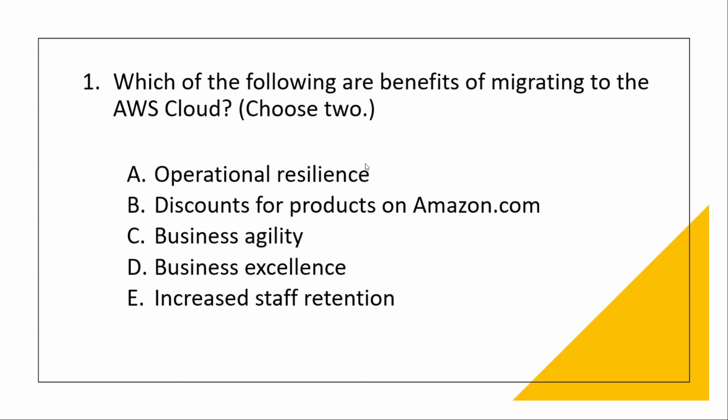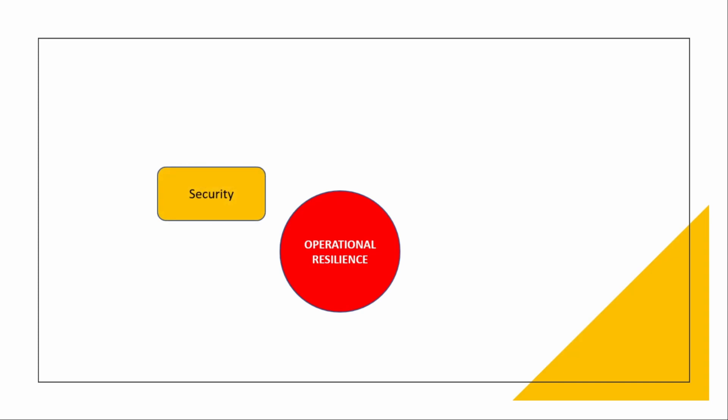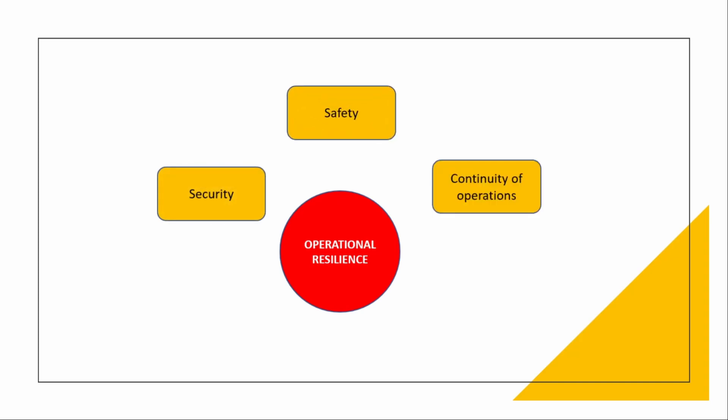Now coming to operational resilience — what does this term mean? Operational resilience means giving you security, safety, and continuity of operations. Due to some disaster or whatever, AWS has mechanisms through which your business can keep running even through disaster problems. It has highly managed services which you can use to have secured, safe, and continuous operations. So definitely one reason to move to cloud is operational resilience.